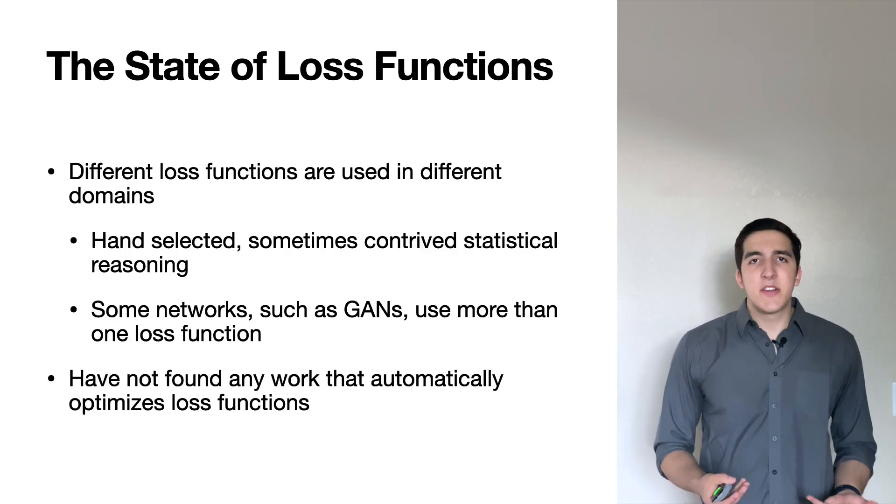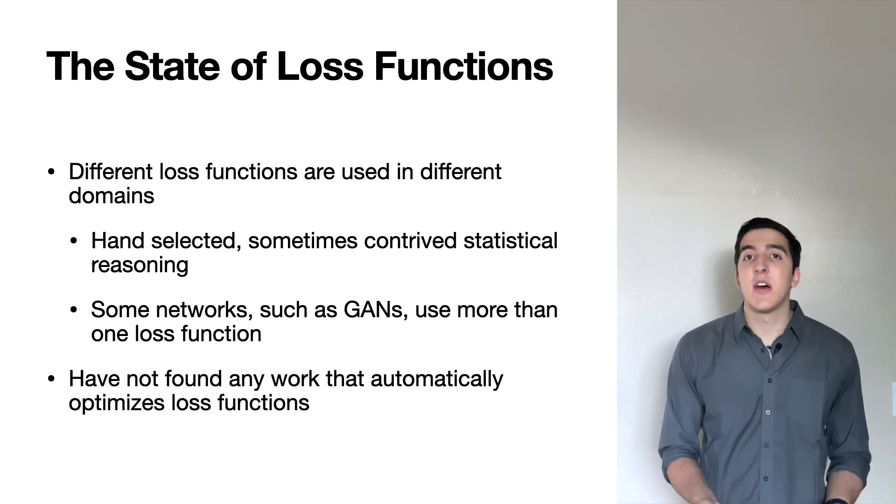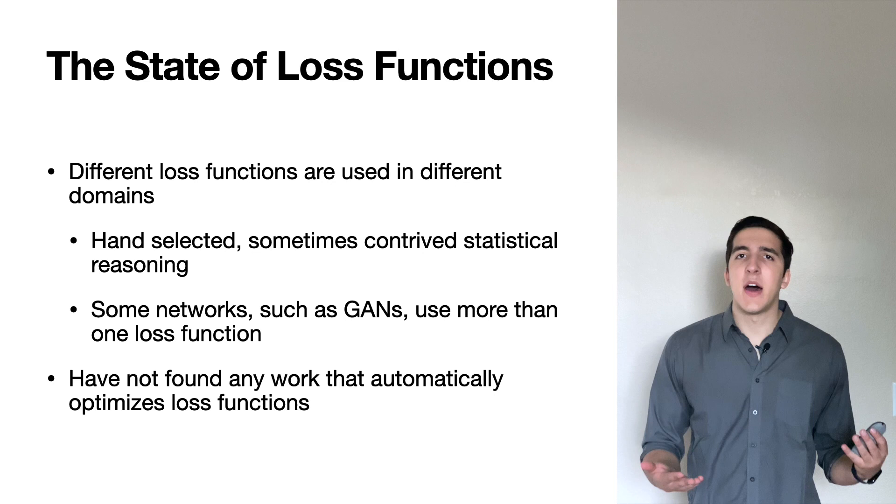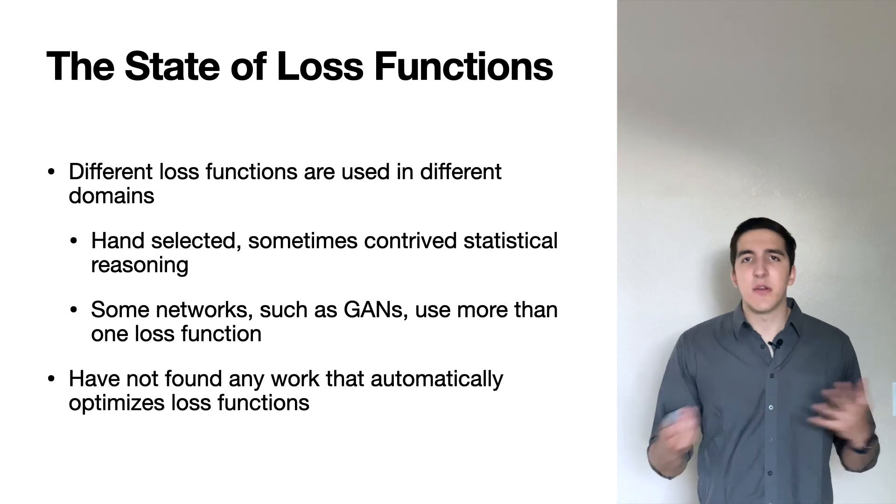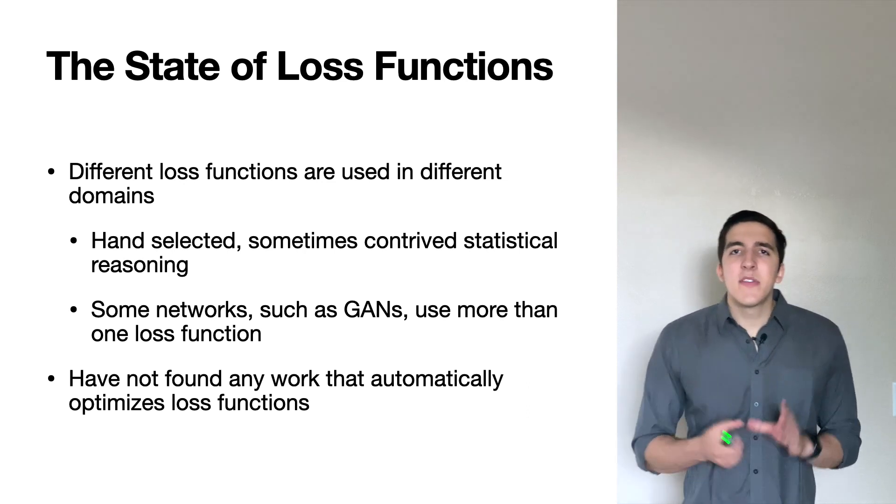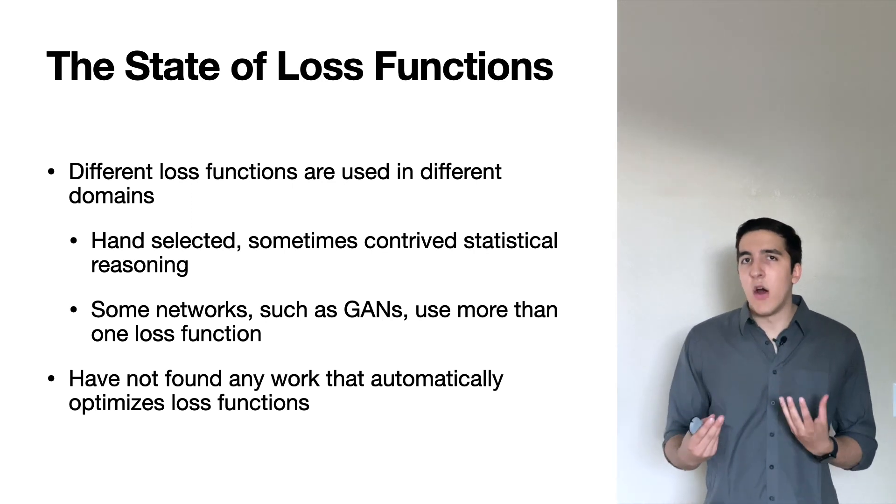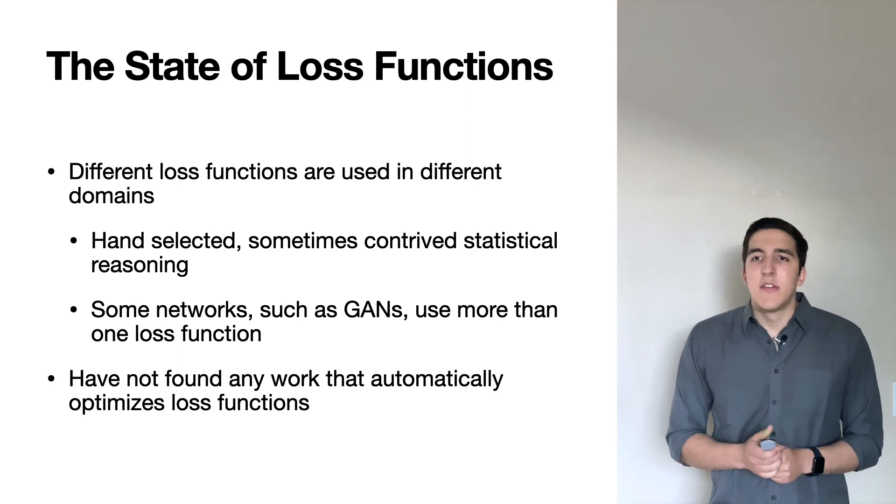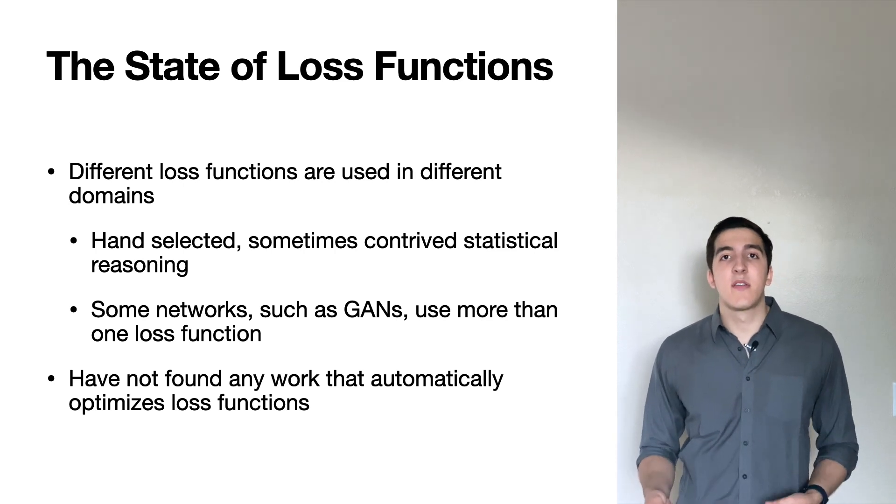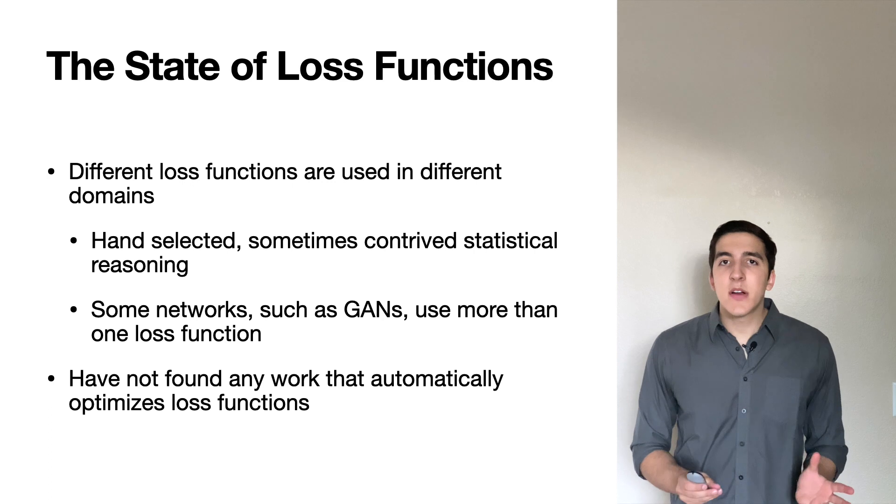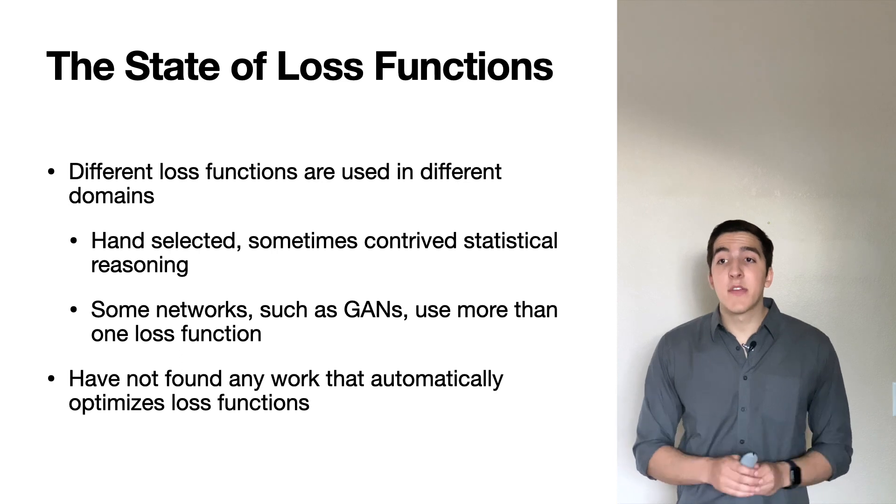We can take predictions and a set of corresponding labels and the loss function is able to provide a differentiable value that allows the network to learn. So this is really the core learning step in a neural network. So what is the state of loss functions today? There's a few different loss functions that are very widely used, such as the cross-entropy loss for classification, mean squared error for regression problems, and a few more specialized ones for more unique problems such as sequence-to-sequence encoding. However, these are all hand-selected functions and you oftentimes have some contrived statistical reasoning along with them as to why they work. So some networks even have more than one loss function, such as generative adversarial networks. So we haven't found any work prior to this that automatically optimizes loss functions.